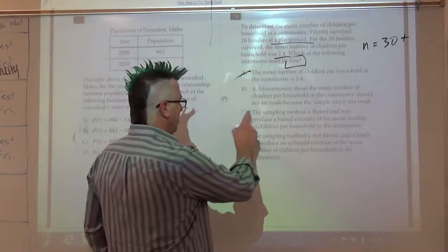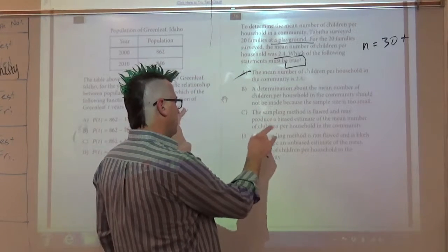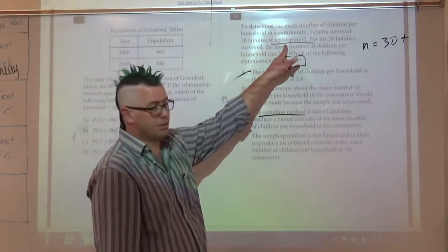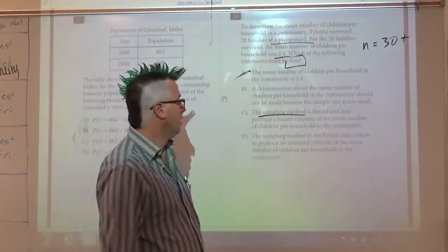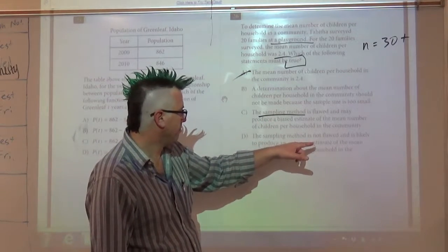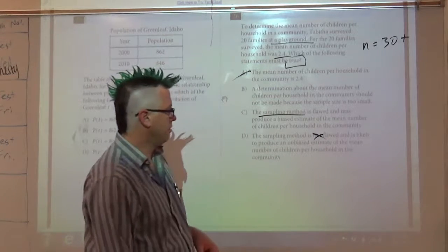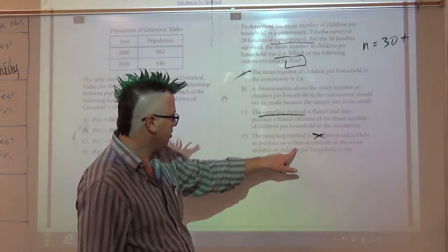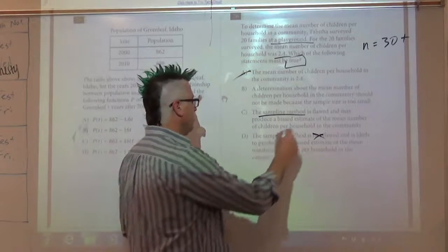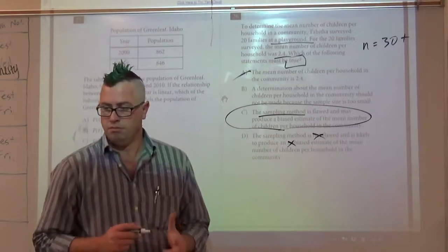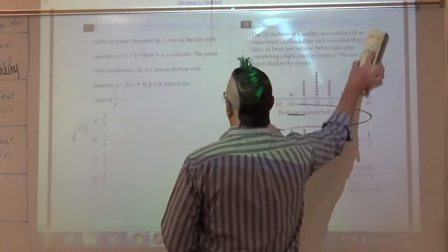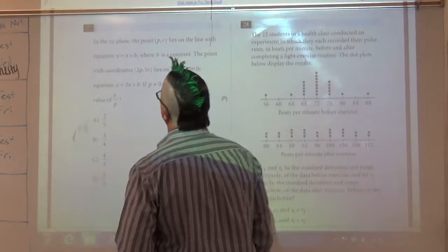C: The sampling method is flawed and will produce a biased estimate of the mean number of children per household in the community. Sampling method means I just picked people at the playground. I didn't go knock on doors in the community. I didn't randomly select people. So far I'm liking this answer. It certainly seems flawed and is likely to produce a biased one because people without kids are probably not at a playground. So let's go with C.